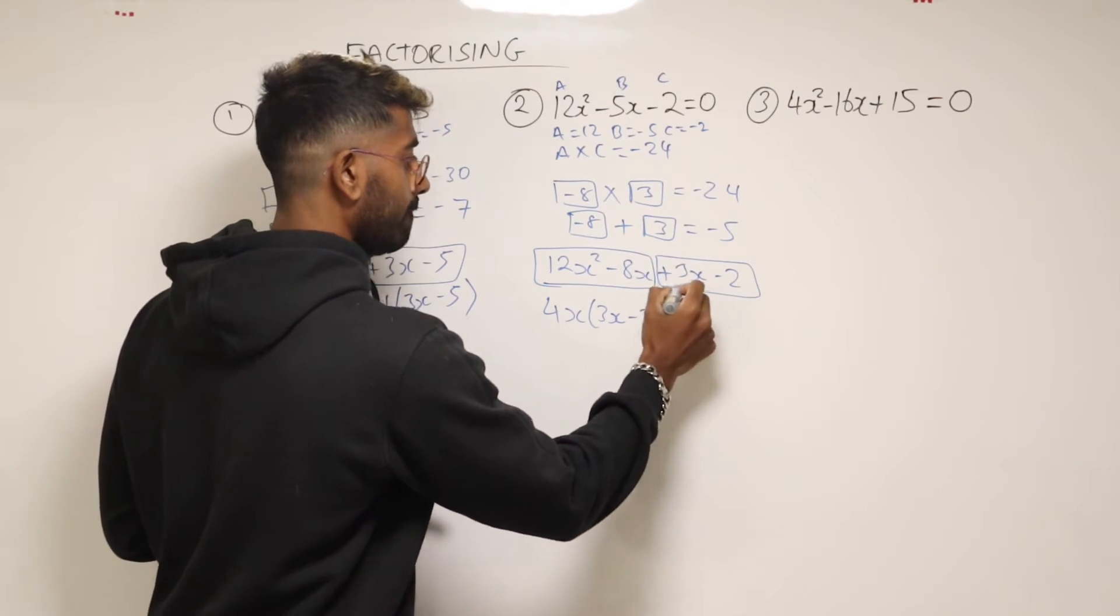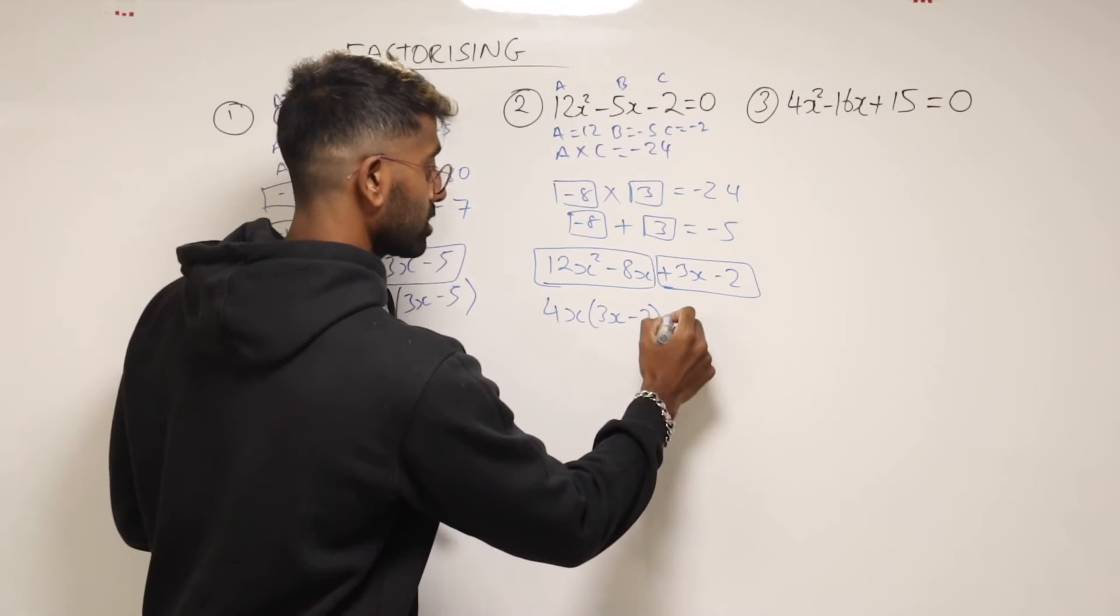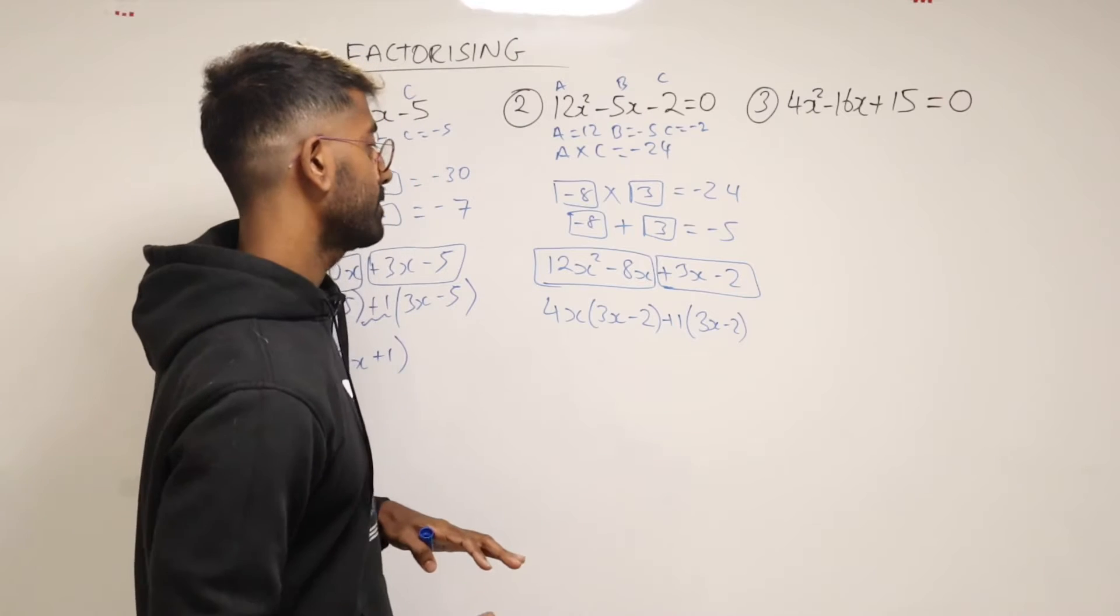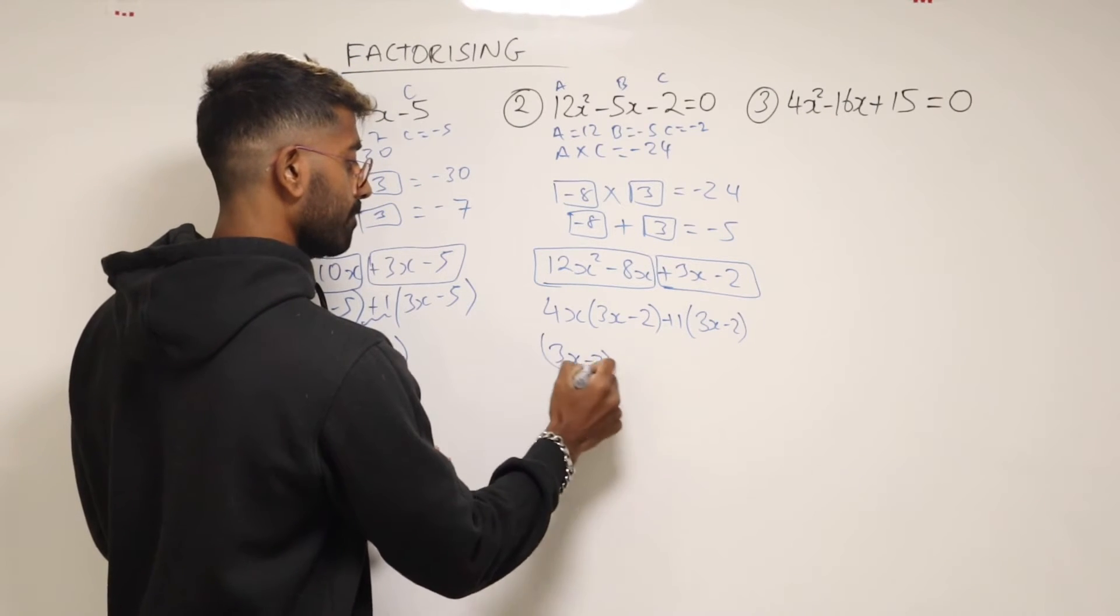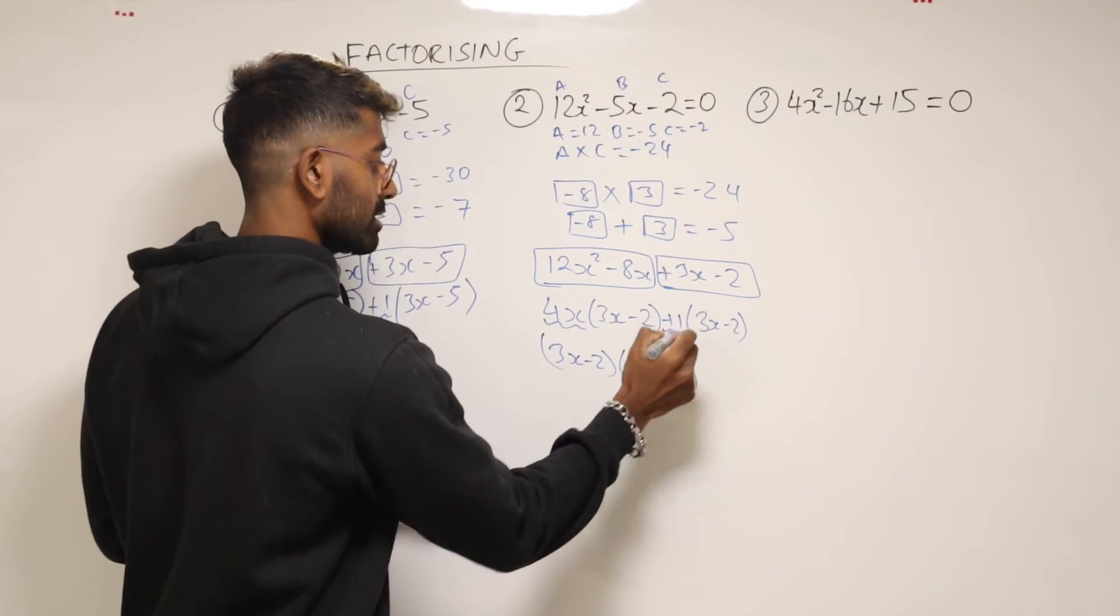And then again, from this part, the most you can take out from there is just 1. So we write plus 1, and then 3x minus 2. Now the brackets are the same. So we can write 3x minus 2, and then 4x plus 1, because that's what was left over.